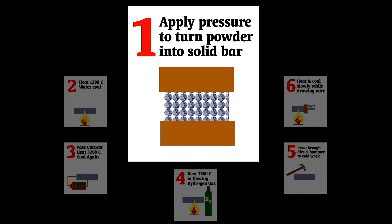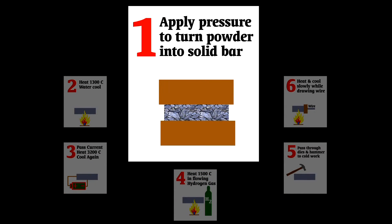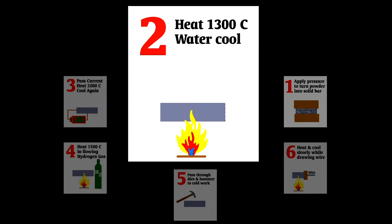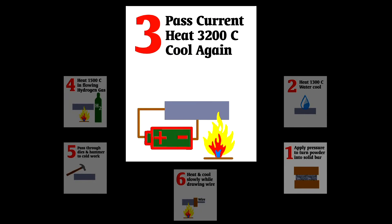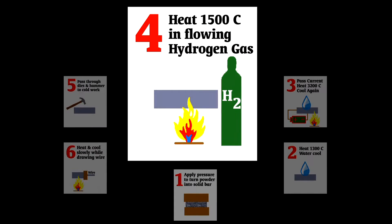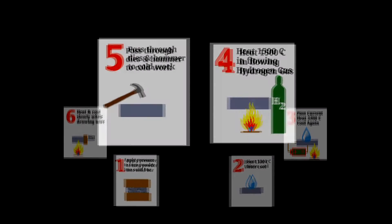To make tungsten ductile took elegant, creative, and careful work by an engineer at General Electric. William Coolidge developed a process for taking tungsten powder and making it into wire. Here's an abbreviated list of the steps: One, apply great pressure to turn tungsten powder into a fragile bar. Two, heat it to 1,300 degrees Celsius and then cool it with water. Three, pass a current through the tungsten while heating it to 3,200 degrees Celsius and then cool again. Four, heat yet again to 1,500 degrees Celsius, but this time while flowing hydrogen over it.